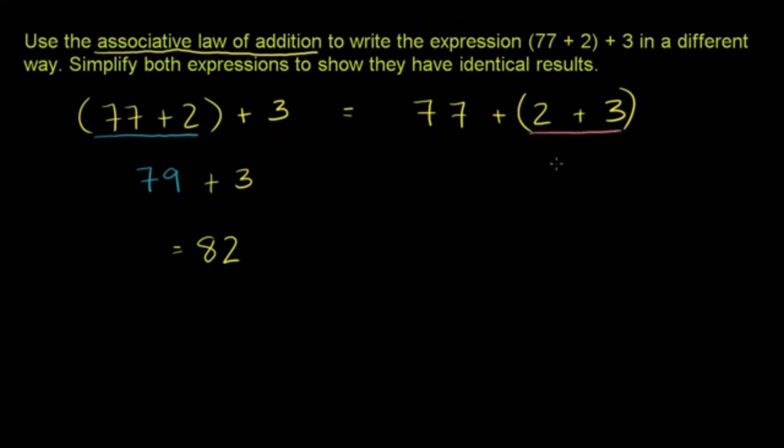So 2 plus 3 is 5. So this evaluates to 77 plus 5. And 77 plus 5, once again, is 82.